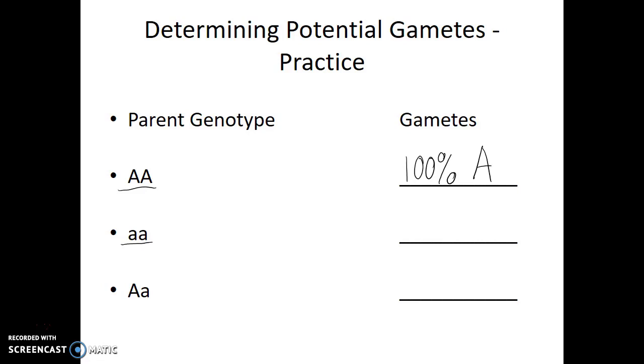The next parent who is homozygous recessive, well, in this case, all of their gametes will be lowercase a, 100%.